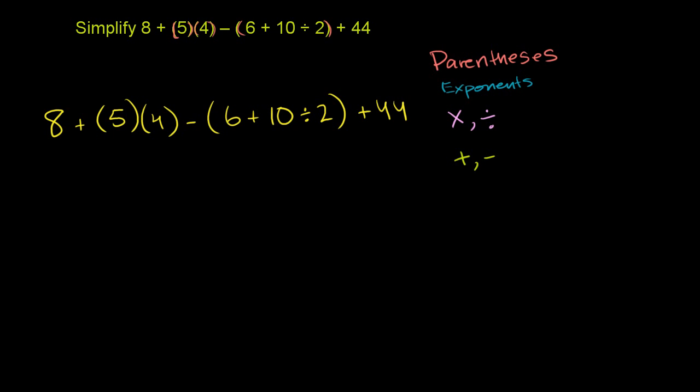So we're going to want to do the parentheses first. We have parentheses there and there. Now this parentheses is pretty straightforward. Inside the parentheses, it's already evaluated. So we could really just view this as 5 times 4. So let's just evaluate that right from the get go.